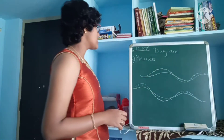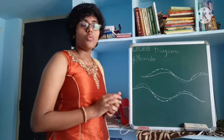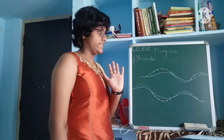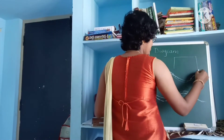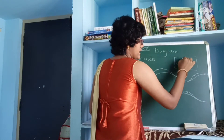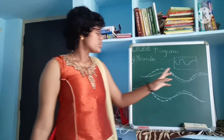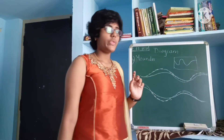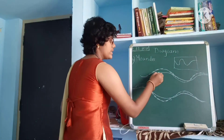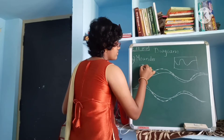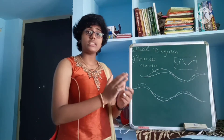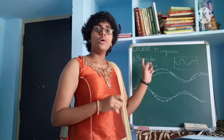The fourth feature is the meander. What is a meander? At some places, the river takes very large bends. The bend is known as the meander. The large bends of the river are known as the meander.